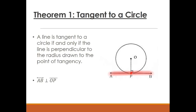What this theorem is saying is that if you take radius OP — the radius drawn to that same point of tangency — it's going to be perpendicular to the tangent line. So if you have a diagram with a tangent line and a radius drawn to that same point, you know the radius must be perpendicular to that tangent line. That's what Theorem 1 says.